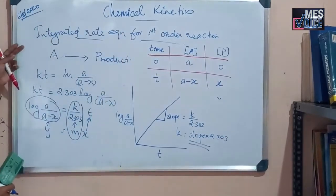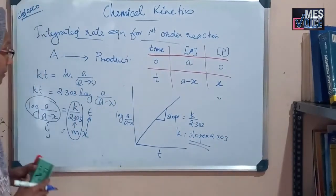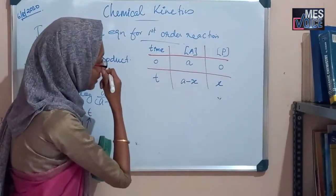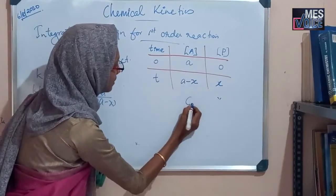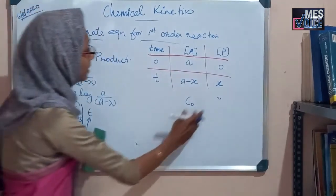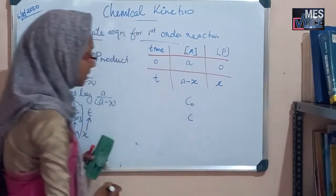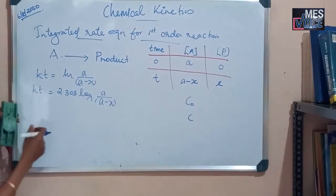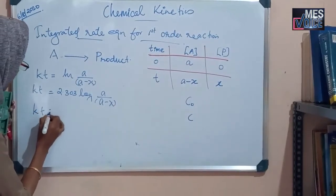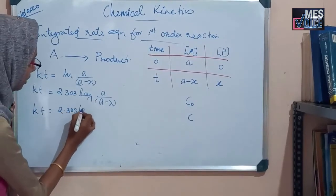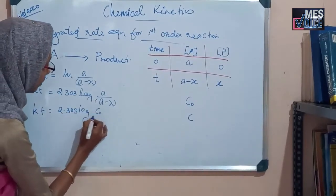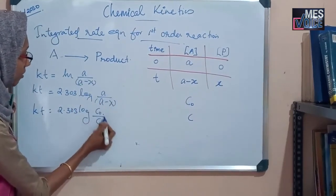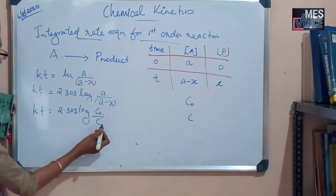This is the integrated rate equation for a first order reaction. Here, for initial concentration, we can represent the initial concentration as C₀ and the concentration after a time T as C. So, this equation can be written in another way: Kt is equal to 2.303 log(C₀ / C). These both are similar. Here, C₀ is the initial concentration and C is the concentration after a time T.